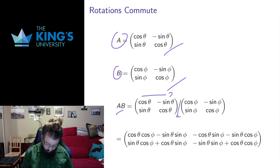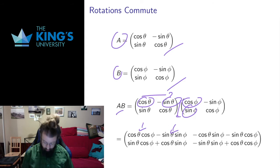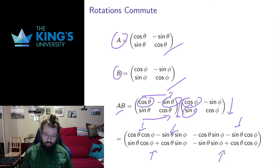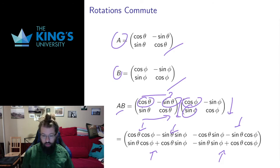So we do the matrix multiplication. We go across the first row and down the first column. That gives us cosine times cosine and sine times sine, which gives us the first entry. Likewise, I get the second, third, and fourth terms using matrix multiplication, going across the rows of the first matrix and down the columns of the second matrix. And I get this complicated matrix with four entries. Each entry is a sum and product of various cosines and sines of phi and theta. So this will be the form we have for A times B.